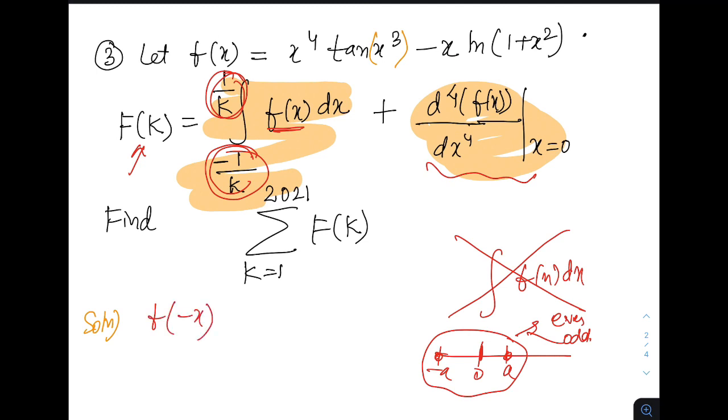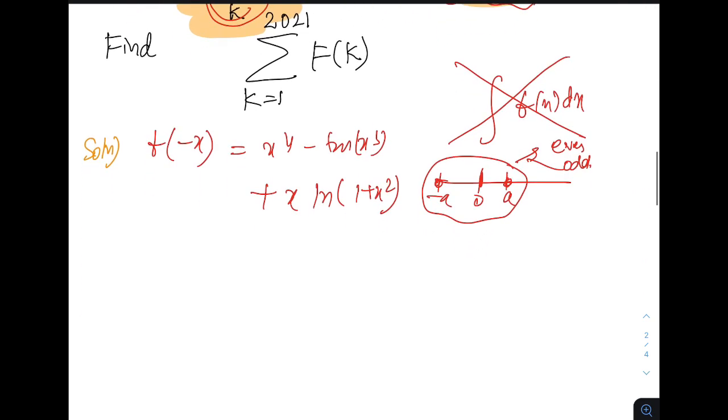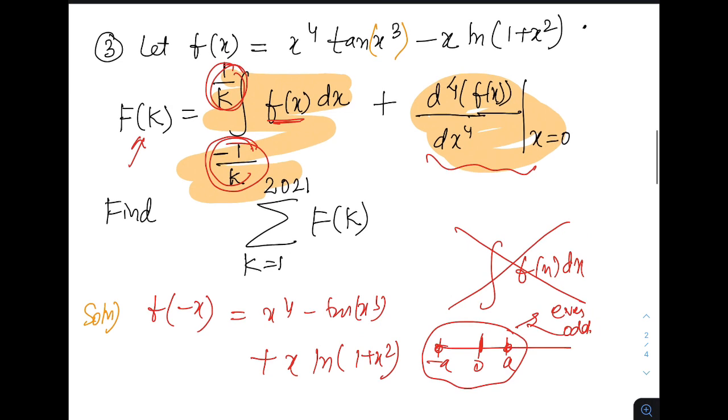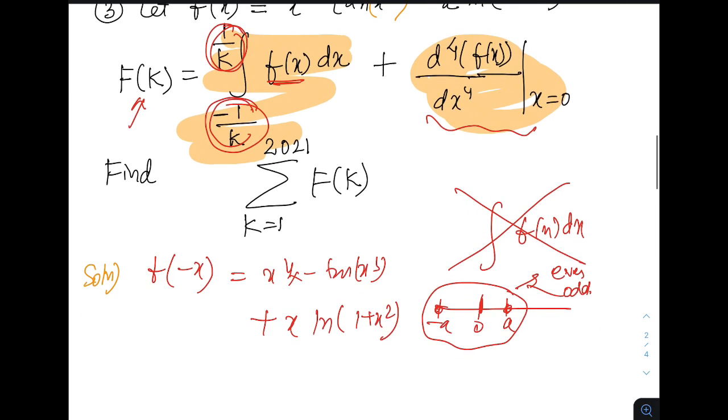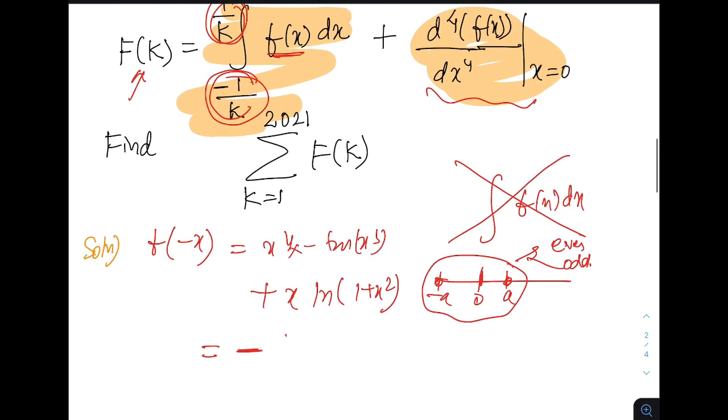If I take f of minus x I am getting x to the 4 minus tan of minus x cubed. Tan is an odd function and that will amount to x to the 4 tan of x cubed minus x ln of 1 plus x squared replacing x with minus x. Minus x will become plus x and it can be clearly seen. So we have x to the 4 into this. So it's clearly seen as I will take minus common we are back to f of x. So f of x is an odd function.